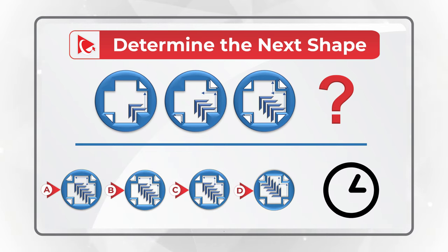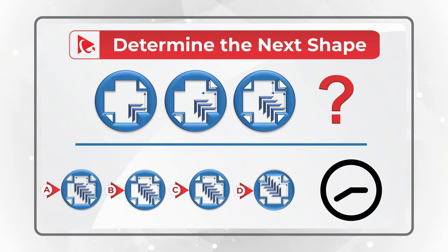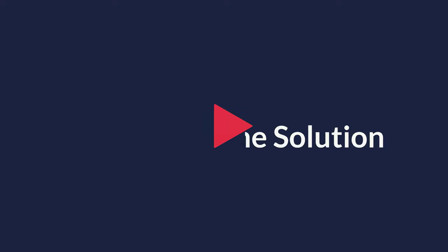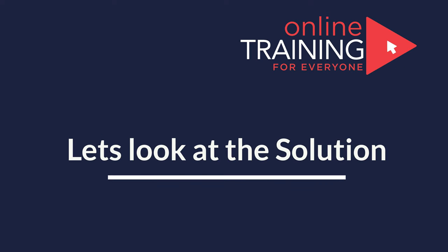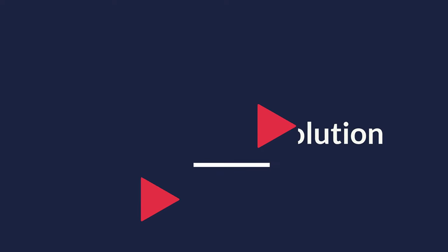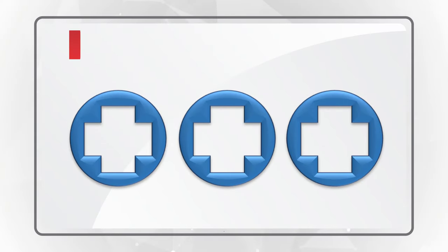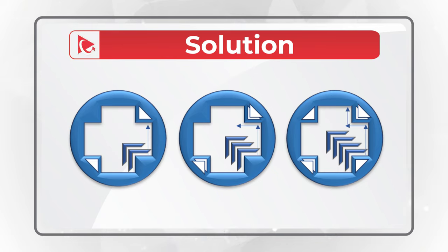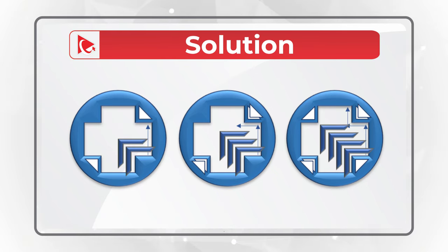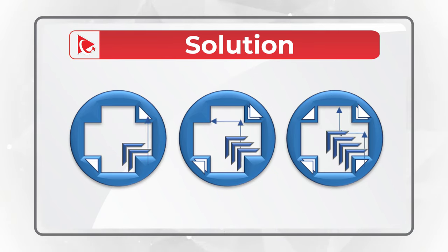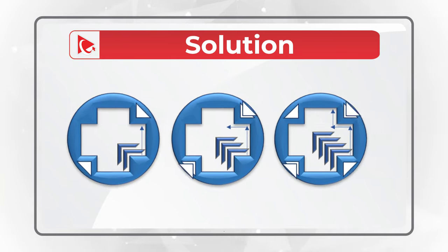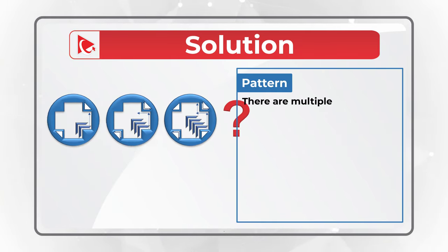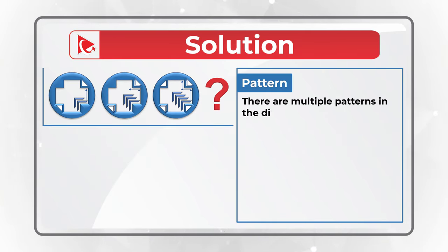Maybe give yourself 10 to 15 seconds — that's about as much time as you get in a real test. I am moving forward to share with you my version. If you have a better solution, please make sure to share in comments. There are a variety of different objects to examine: internal lines, arrows, and corner triangles. There are multiple patterns in this diagram for all of these objects.